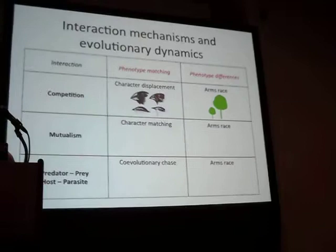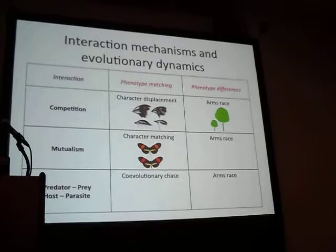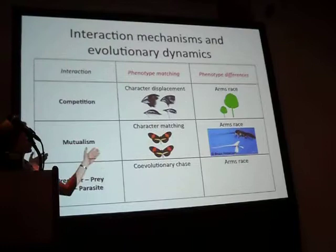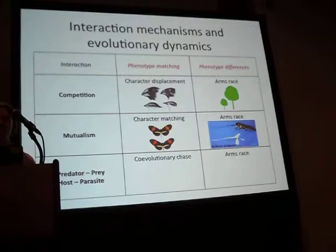You see the same kinds of differences in mutualism: there are two different Heliconius butterflies that have converged on one phenotype. But you can also have mutualistic interactions involve an arms race, where the flower does better by having a longer spur, forcing the pollinator to come in close and pollinate, while the pollinator does better if it has a really long tongue and is able to collect more nectar.